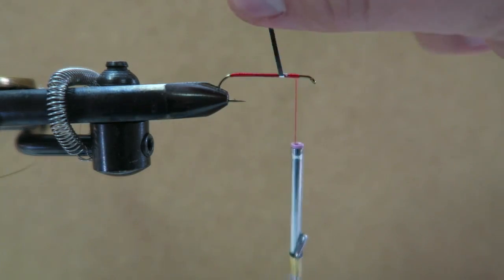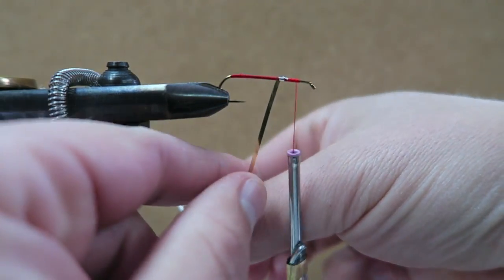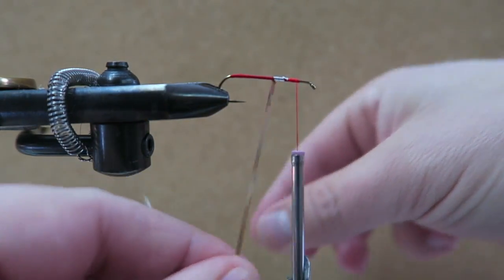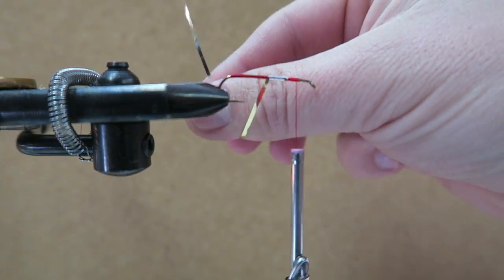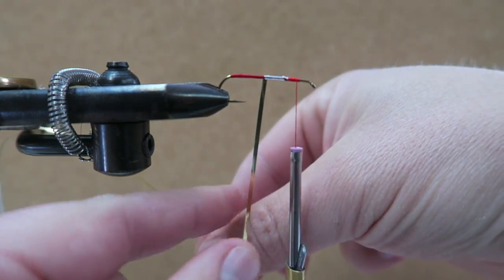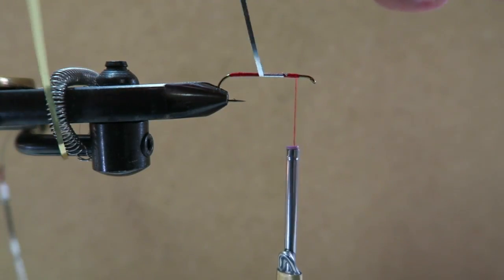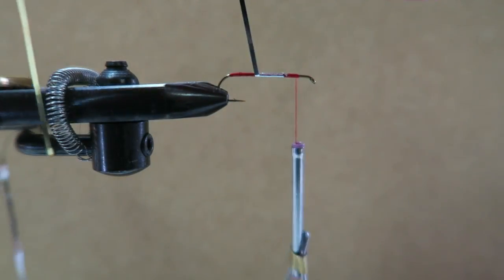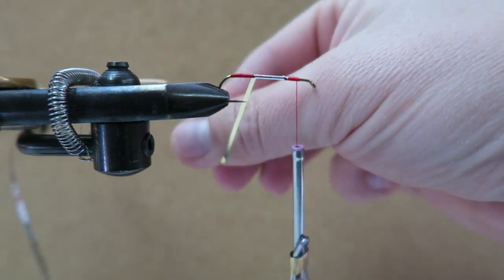Then I'm going to wrap it all the way to the back and do some nice side-by-side wraps. Try to have them overlap each other. If you miss a spot it's okay because you're going to come back up with it anyway, and that should cover any spots that you might have missed.